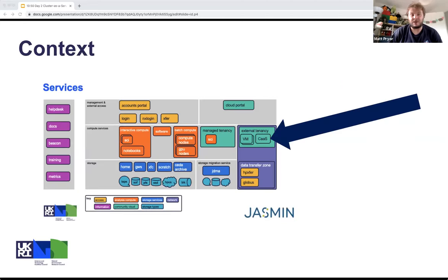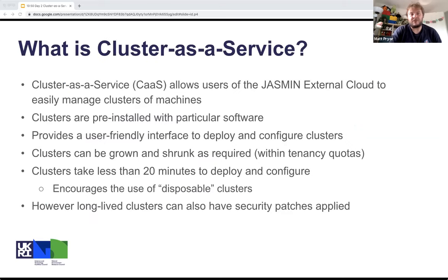This is where we sit. The cluster as a service currently operates in the external cloud, in the cloud part of the context diagram. Cluster as a service is providing building blocks for you to assemble your own custom platform in the Jasmine cloud. It allows users of the Jasmine external cloud to easily manage clusters of machines that are stamped out from templates, and the clusters come pre-installed with particular software. We'll see some examples of that on the next slide.